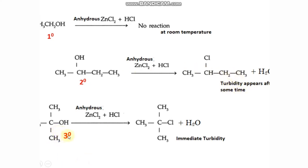Then the tertiary alcohol, 2-methylpropan-2-ol, undergoes reaction with Lucas reagent and there is immediate turbidity. This immediate turbidity is due to the formation of 2-chloro-2-methylpropane. So immediate turbidity appears in the case of tertiary alcohol. In the case of secondary alcohol, turbidity appears but after some time, generally within 5 minutes. Primary alcohol does not react with Lucas reagent at room temperature.